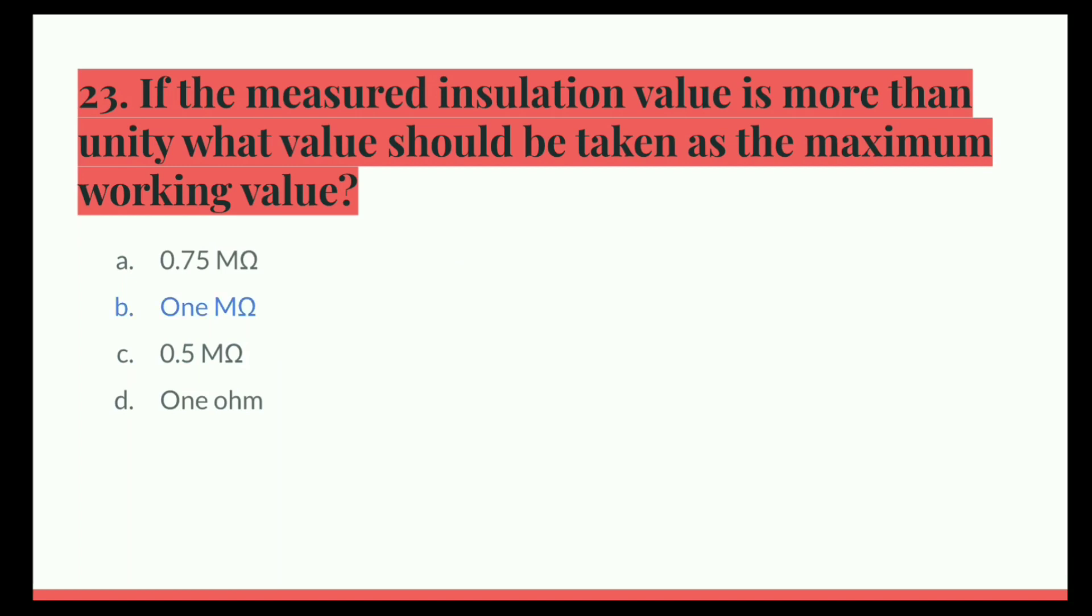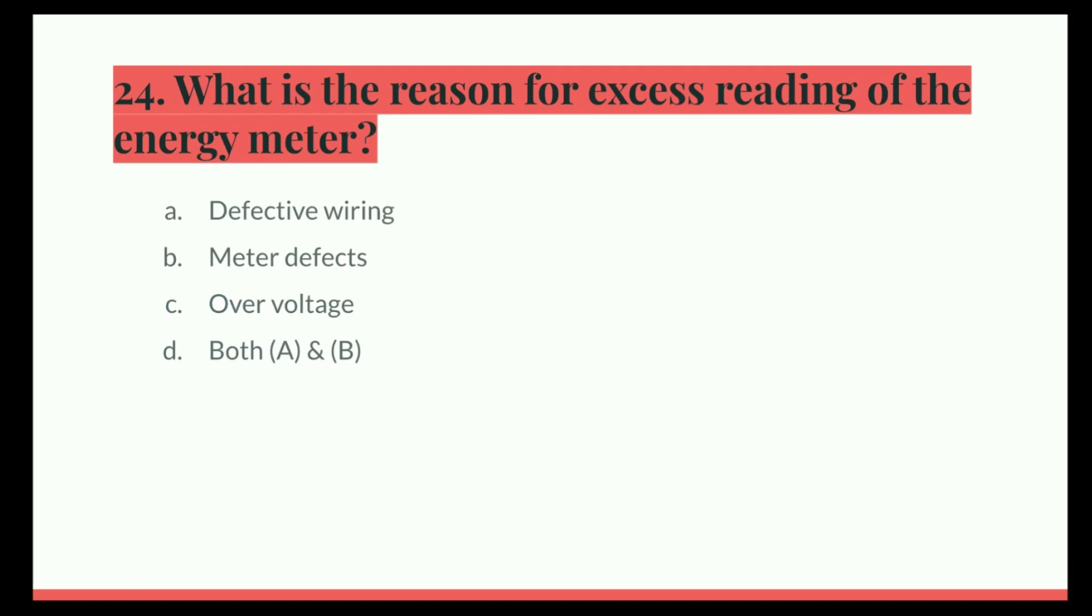Next question. What is the reason for excess reading of the energy meter? Option A, defective wiring. B, meter defect. C, over voltage. D, both A and B. And the correct answer is both A and B, defective wiring and meter defects.